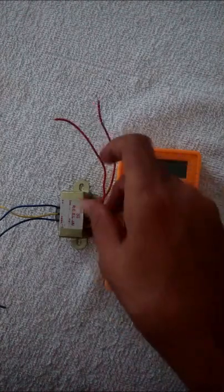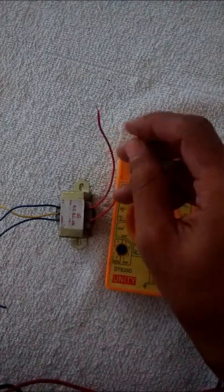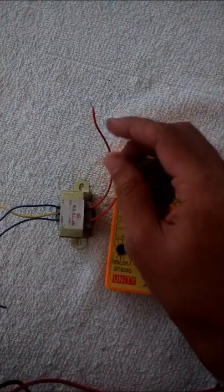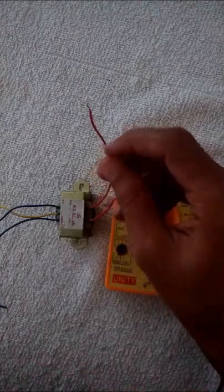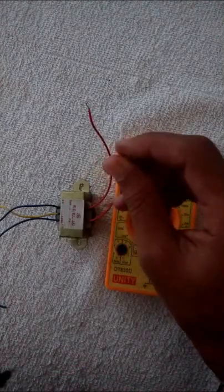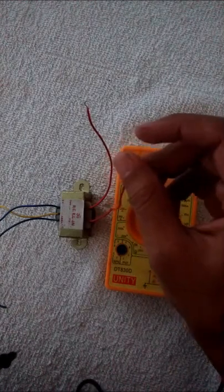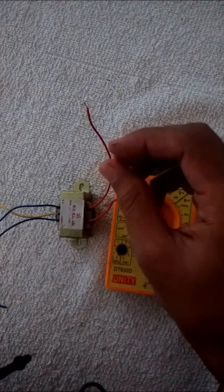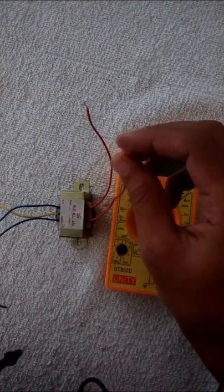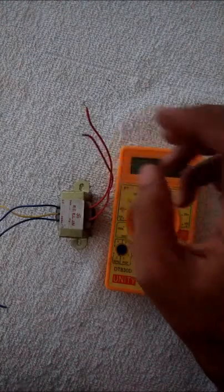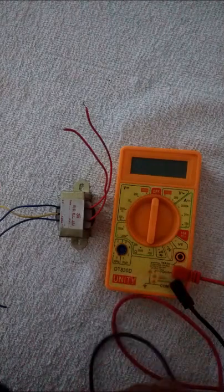We know that the input side in step-down transformers will have more number of turns than the output side. So if we check the resistance of these sides, output and input, then the side with more resistance will be used as an input, and the side which is having lesser resistance will be used as an output. So let's check the resistance.